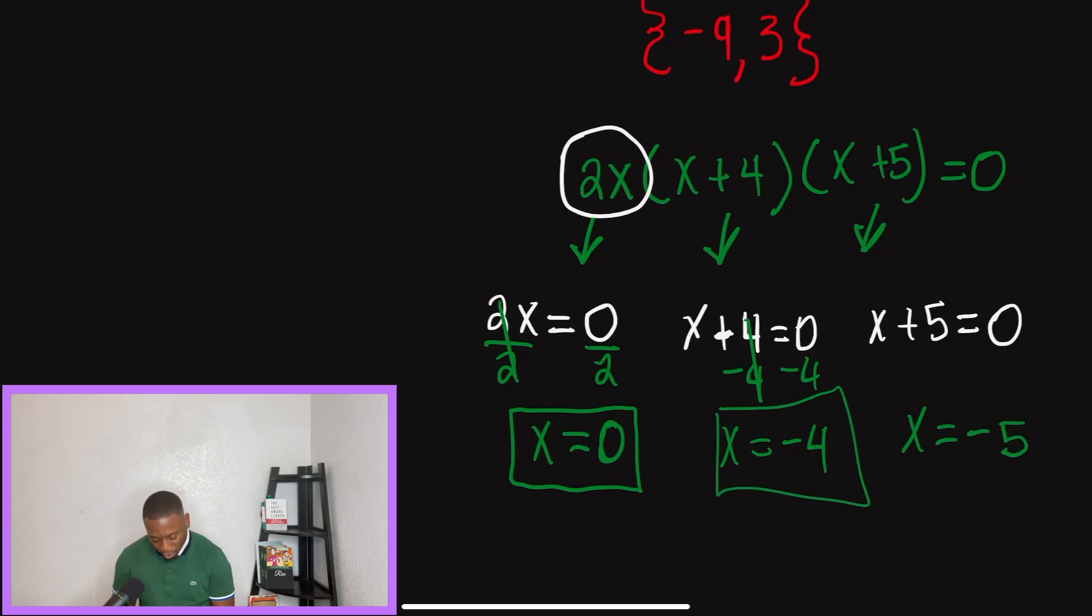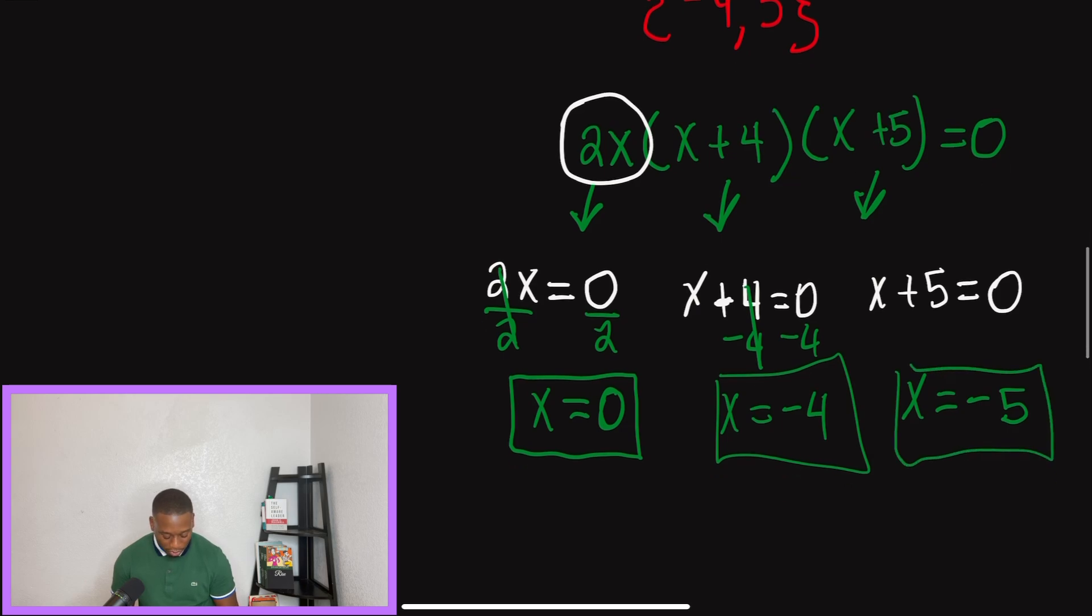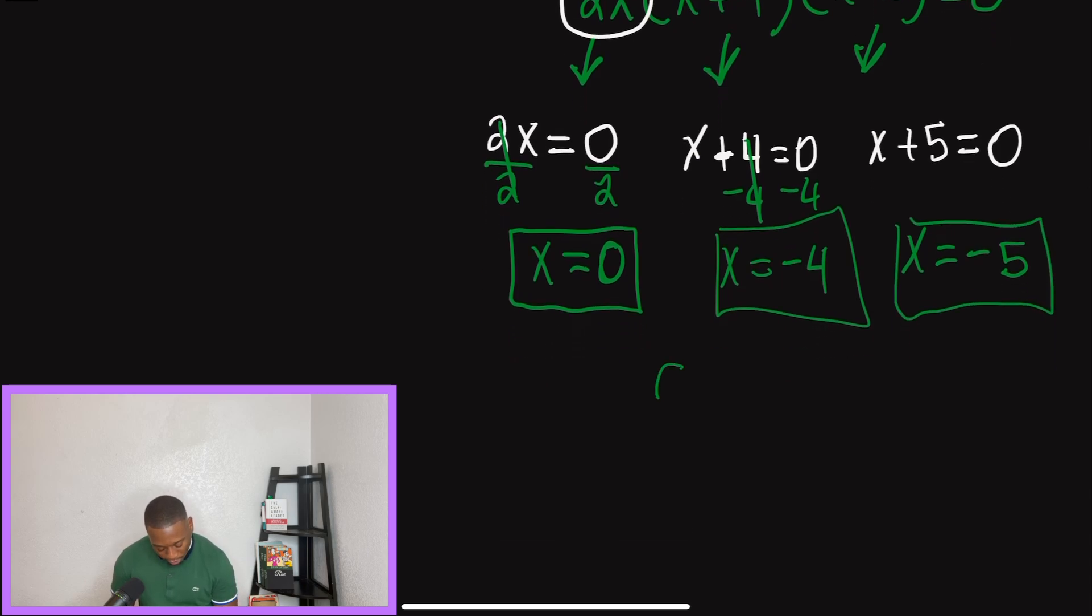So the same thing applies when we do the solution set now. We're going to draw our braces and order this from least to greatest. So our answer should be negative five, negative four, and then zero. So basically guys, we're really just setting our factors equal to zero and then solving. But before we wrap this video up, what I really want to do is do a problem from start to finish so that you can see.